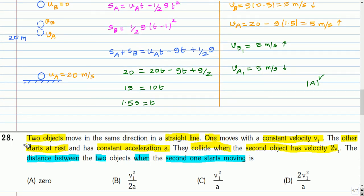This is the next question. Two objects move in the same direction in a straight line. One moves with constant velocity V1. The other starts at rest and has constant acceleration A. They collide when the second object has velocity V1. The distance between the two objects when the second one starts moving is to be found.